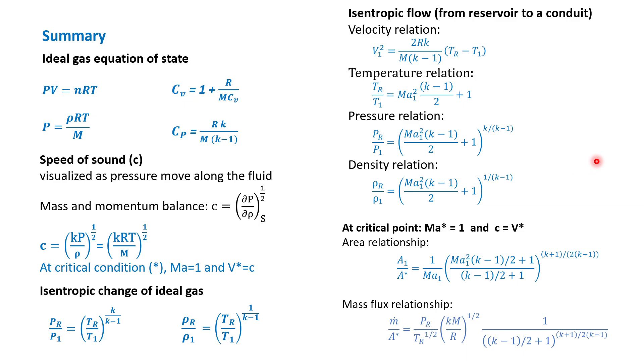Then to calculate the flow through a conduit, we develop an equation that involves a point we call the critical point. So that point has a few conditions. At the critical point, Mach number equals 1, which also means that the velocity at the critical point is equal to the sonic velocity.